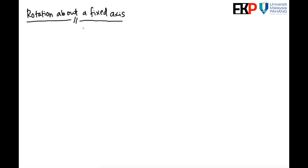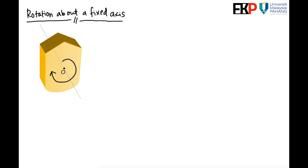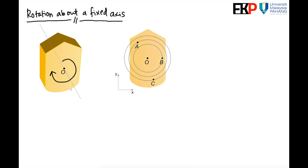In this lesson we are going to discuss rotation about a fixed axis, the second type of motion in planar motion of a rigid body. As discussed previously, rotation about a fixed axis is where a rigid body rotates about a fixed axis. The line indicates the axis of rotation, and from the frontal view the rigid body has a rotation in this direction.